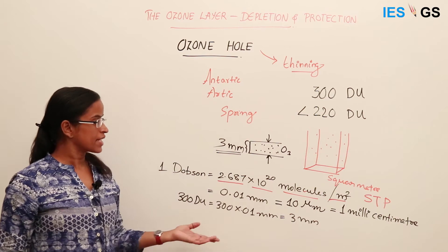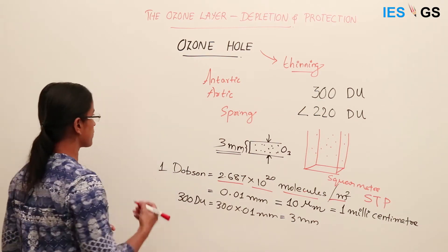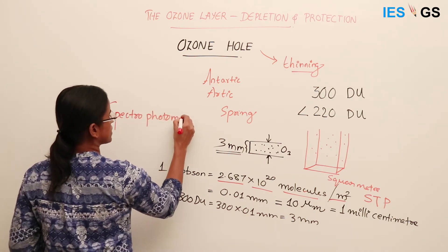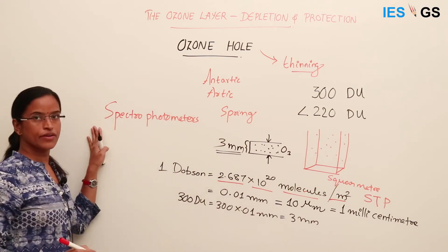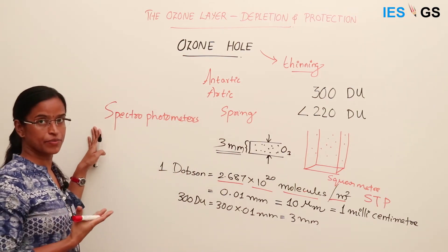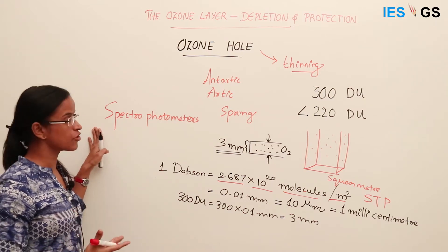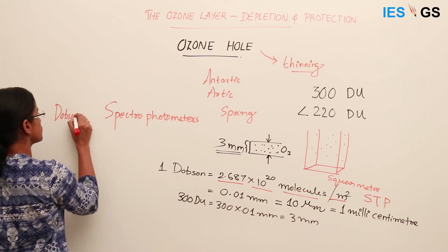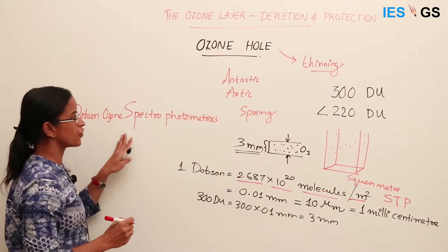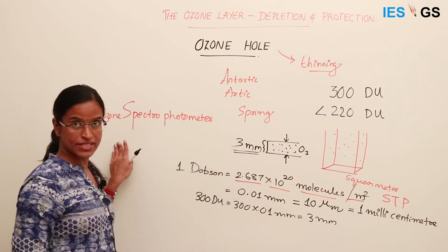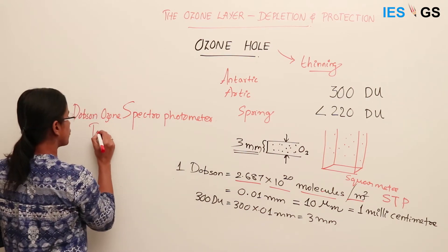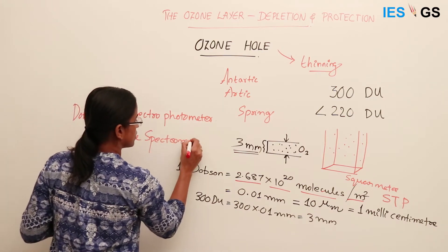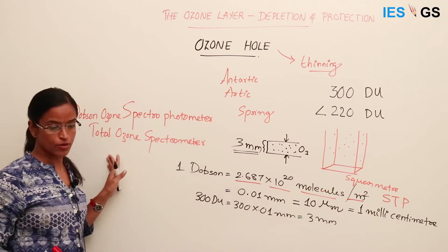To measure the ozone thickness, we use spectrophotometers, which work using the light properties — reflection or refraction — to measure ozone thickness. This instrument is called the Dobson ozone spectrophotometer. Alternatively, we can measure using satellites, which use a Total Ozone Mapping Spectrometer (TOMS).